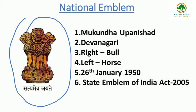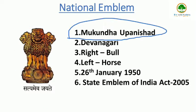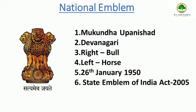State Emblem: It is an adaptation of the Lion Capital of Ashoka from 250 BCE at Sarnath, preserved in the Sarnath Museum near Varanasi, India. The original Lion Capital has four lions mounted back-to-back on a circular abacus. In Devanagari script, 'Satyameva Jayate' — a quote from the Mundaka Upanishad, the concluding part of the sacred Hindu Vedas. The wheel appears in relief in the center of the abacus, with a bull on the right and a galloping horse on the left.